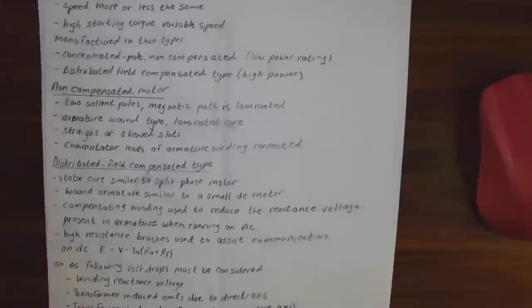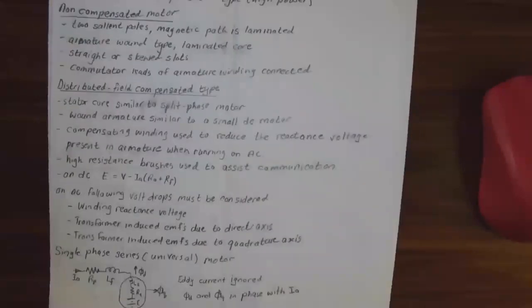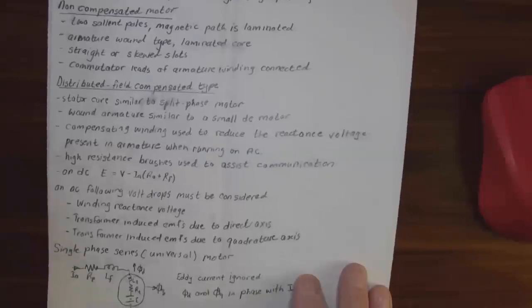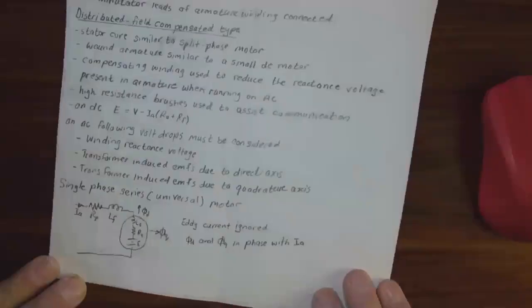The non-compensated motor has two salient poles, magnetic part is laminated, armature one type laminated core with straight or skewed slots. The distributed field compensated type has a stator core similar to a split phase motor, armature similar to a small DC motor. On AC, the following drops must be considered: winding reactance voltage, transformer induced EMF due to the direct axis and due to the quadrature axis.